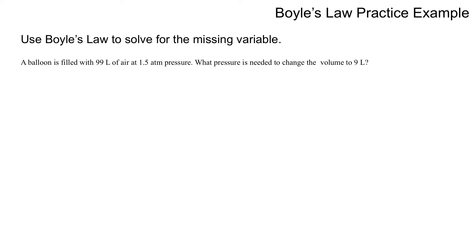You try this example on Boyle's Law. Use Boyle's Law to solve the missing variable. A balloon is filled with 99 liters of air at 1.5 atm pressure. What pressure is needed to change the volume to 9 liters?